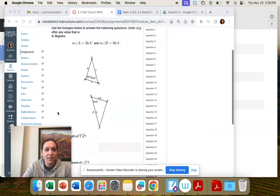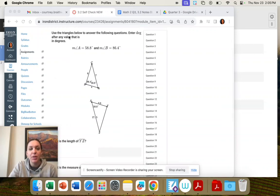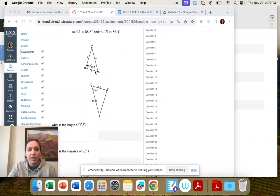Okay, question 28. We're almost there. Use the triangles below to answer the following questions. And we need to enter degree this time if we're finding an angle measure. So we're given two triangles.